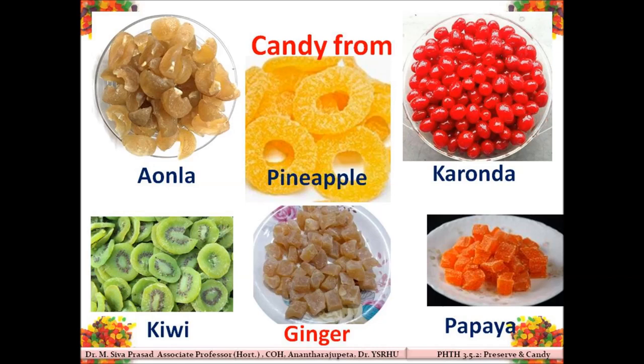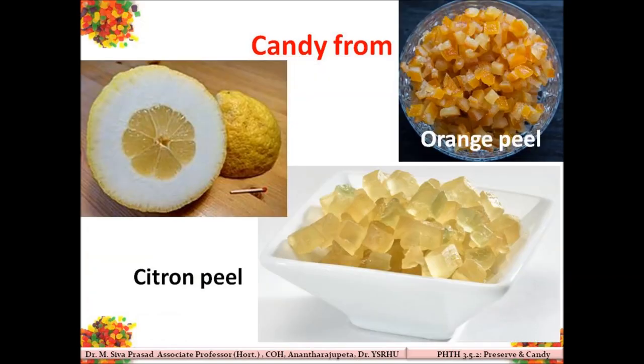Different kinds of candies can be prepared from amla, pineapple, caronda, kiwi, ginger, and papaya. As you can see, candies are devoid of any syrup on their surface — they are completely dried with no syrup adhering to them. This is slightly different from the preserve: the preserve is moist in appearance, while the candies are dry. Citron fruit gives a very flavorful candy, and orange peels are also used for preparation of candies.